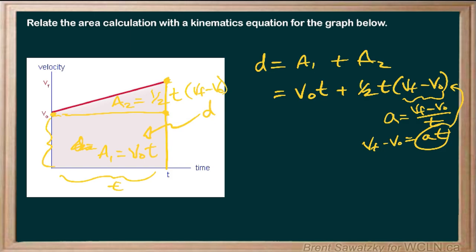And so let's just plug in that AT in place of the VF minus V naught. And so V naught T plus one half. And now we have an A in there. And we have our original T and we have a new T, T squared.